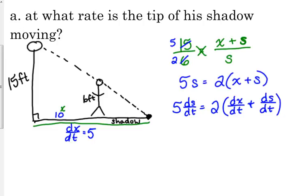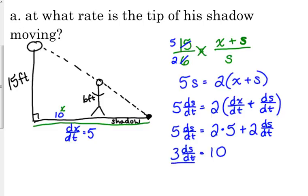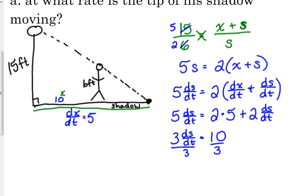So ds over dt is what we're looking for. At what rate is the tip of his shadow moving? That's what we're looking for. I'm going to distribute that two, because dx over dt is five. Because I have ds over dt on both sides, so I need that on one side. So subtract the two ds over dt from both sides, and we get three ds over dt is equal to ten. So divide by three, ds over dt is ten over three.